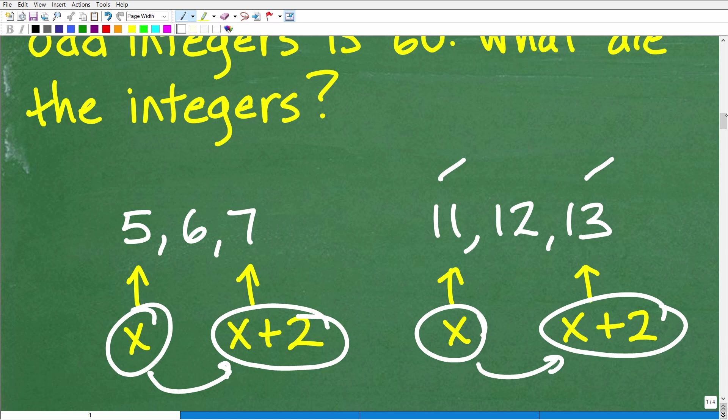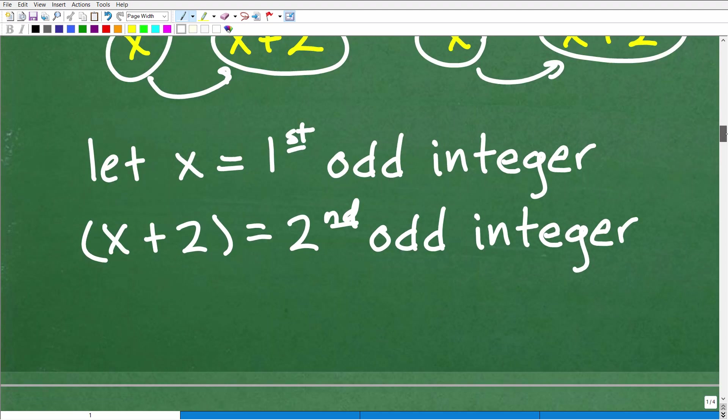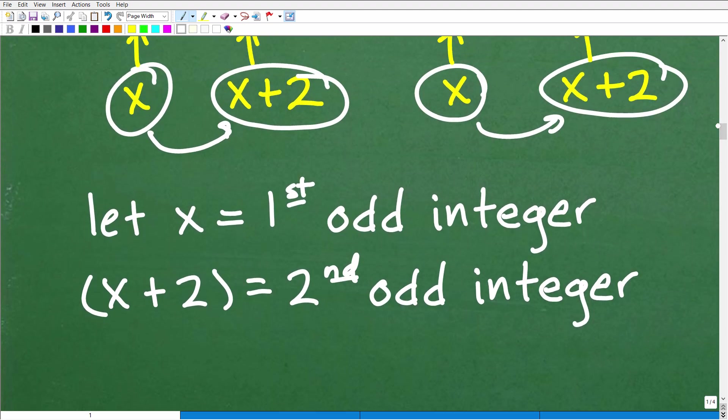So now that you understand the pattern, let's go ahead and formalize this and define variables. So we're going to let X be equal to the first odd integer. So X plus two will be our second odd integer.